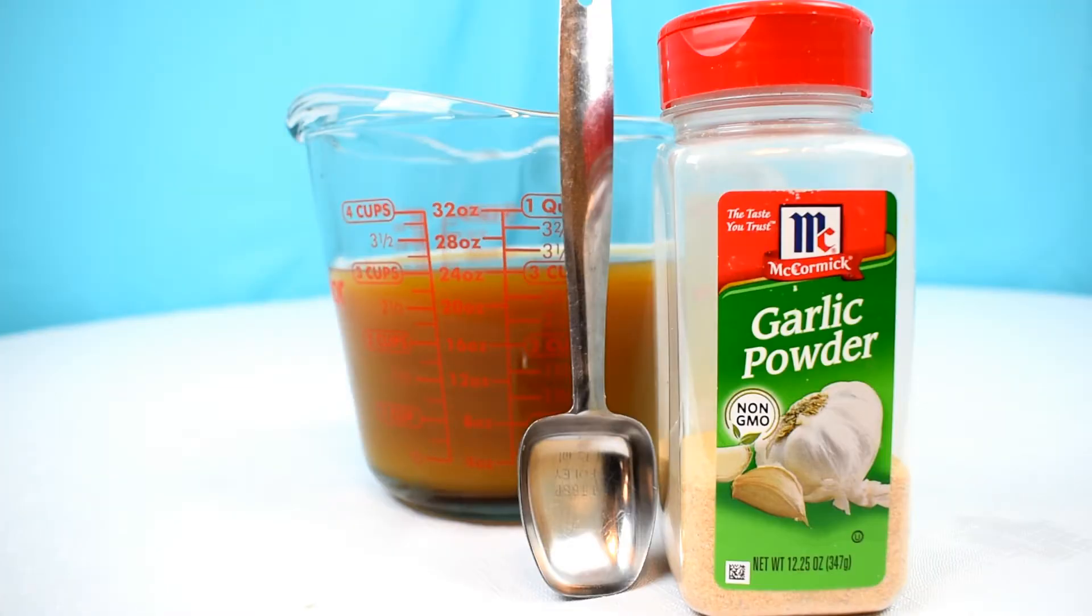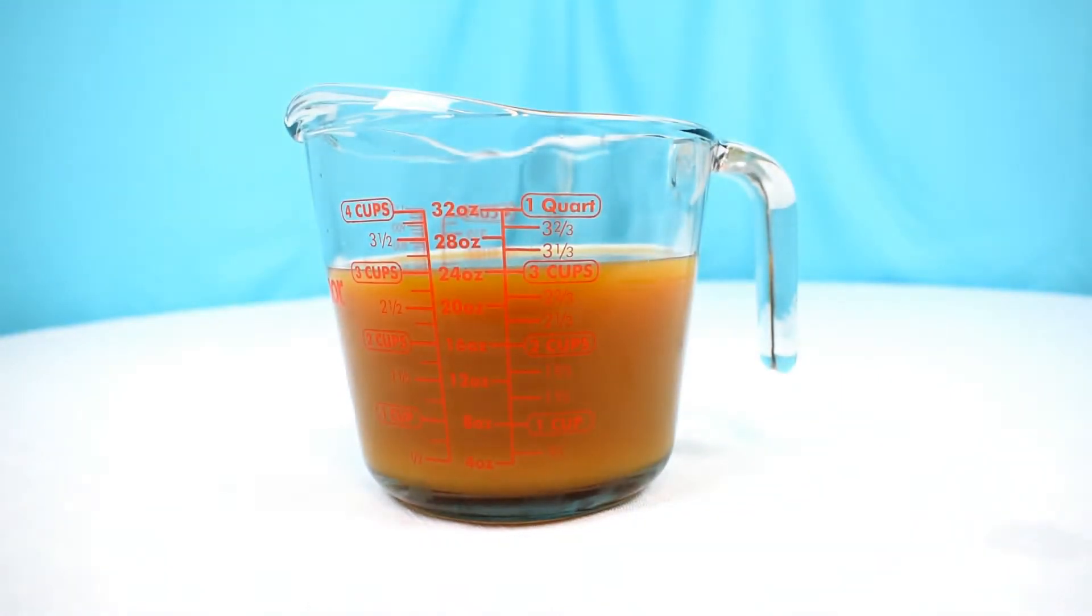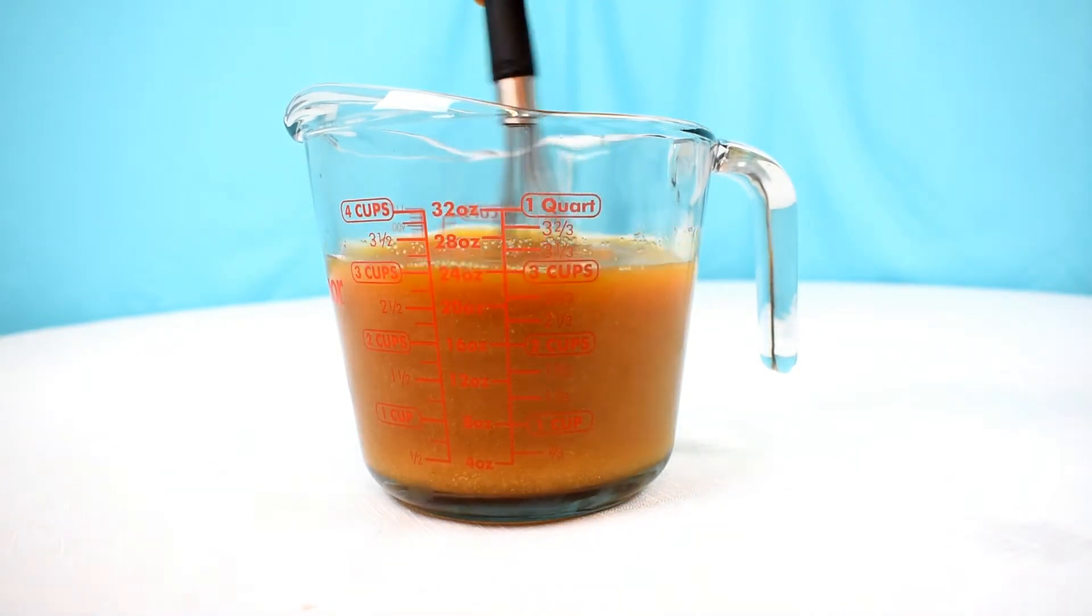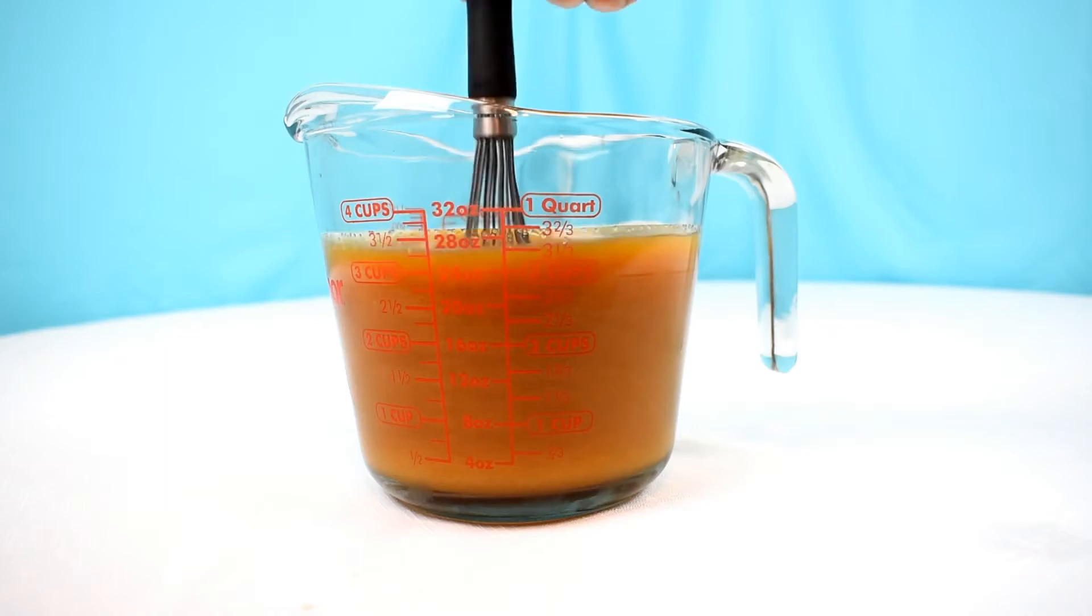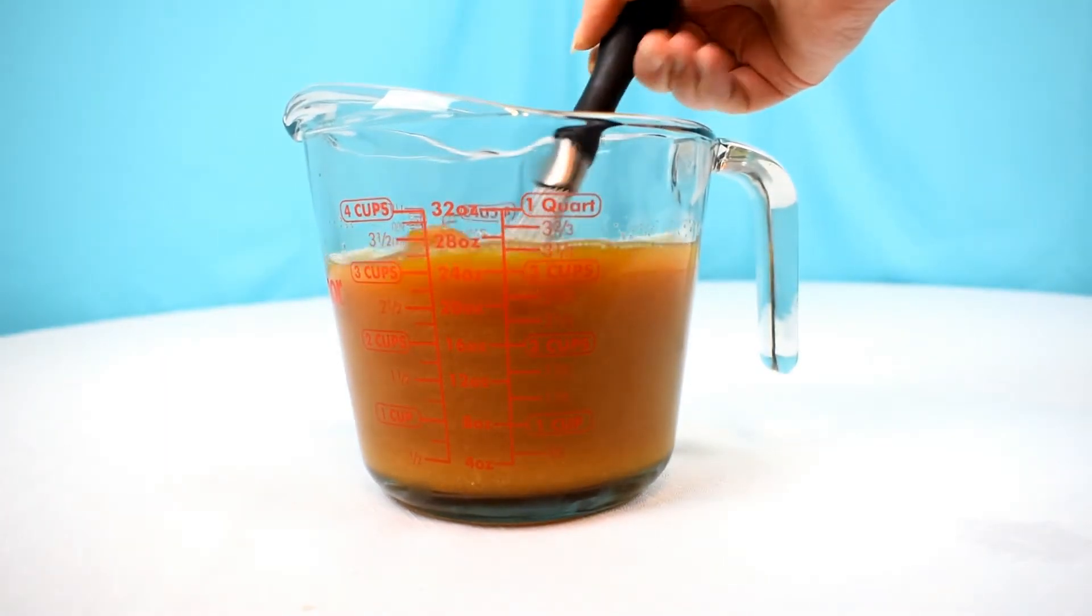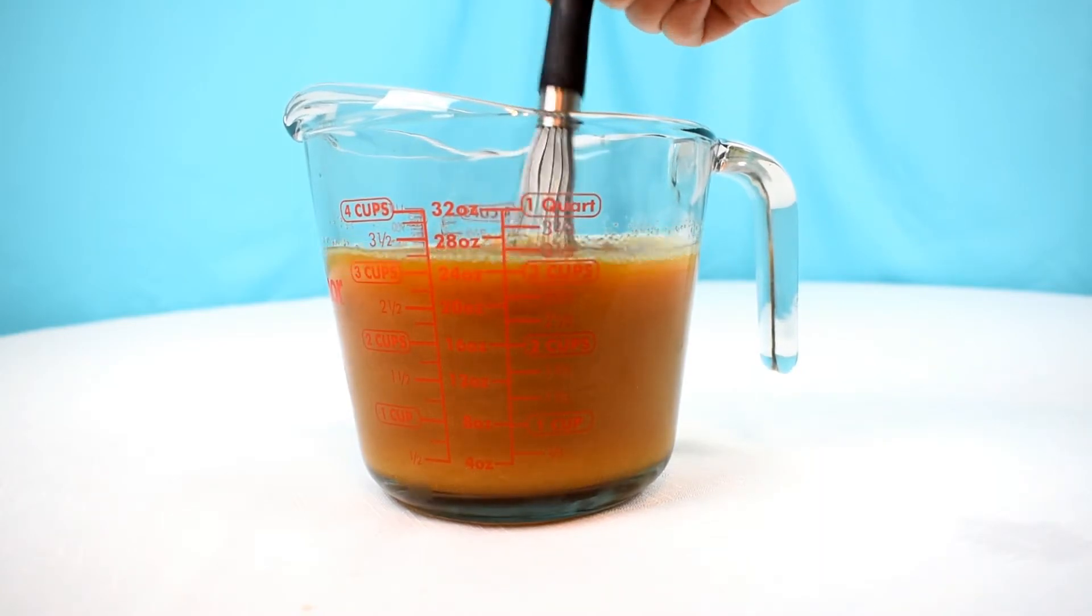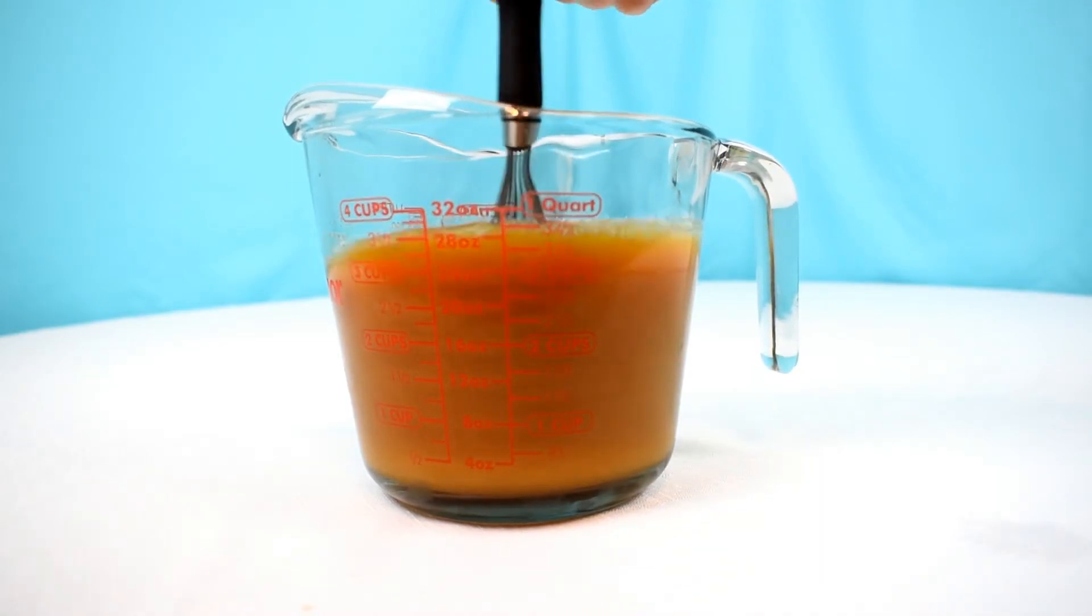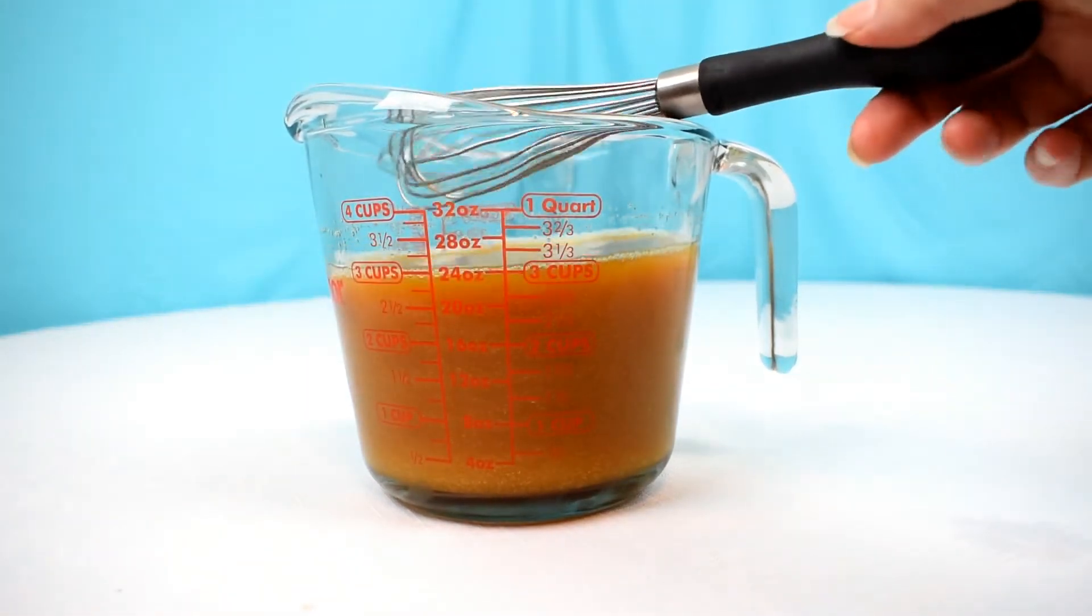And so the next ingredient and the last ingredient is two tablespoons of garlic powder. And again, I know that probably sounds like a lot of garlic powder, but because it's going to be diluted in the water, you're going to want that amount so that you get some garlic flavor into the tofu. So here I am just whisking it up a little bit. This just helps mix the flavors. I'm going to mix it up a second time as I'm pouring it in to help prevent a gigantic clump of garlic powder in one area.